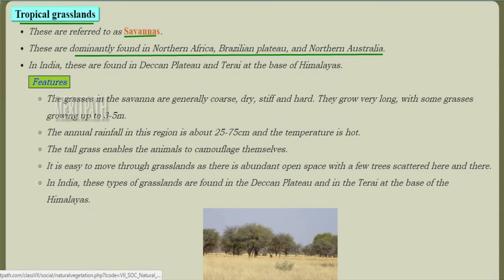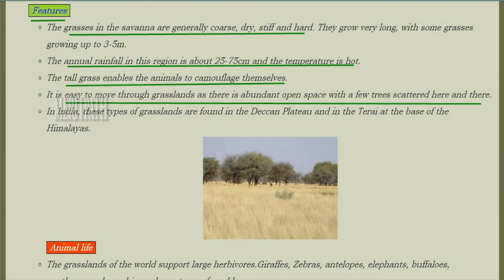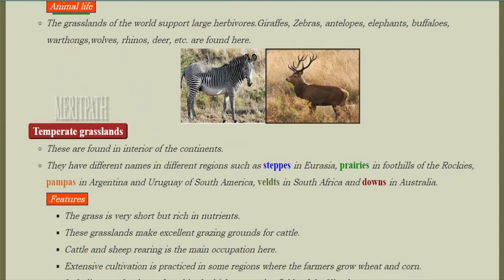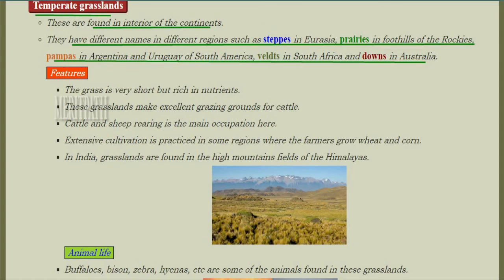Tropical grasslands, also known as savannah, are found in northern Africa, the Brazilian plateau, and northern Australia. In India they are found in the Deccan Plateau and at the Terai at the base of the Himalayas. The grasses in the savannah are very coarse, dry, stiff, hard, and very long — they grow up to three to five meters. Annual rainfall is about 25 to 75 centimeters and temperatures are always hot. This tall grass enables animals to camouflage themselves. There is abundant open space with very few scattered trees. Animals include giraffes, zebras, antelopes, elephants, buffaloes, warthogs, wolves, rhinos, and deer.